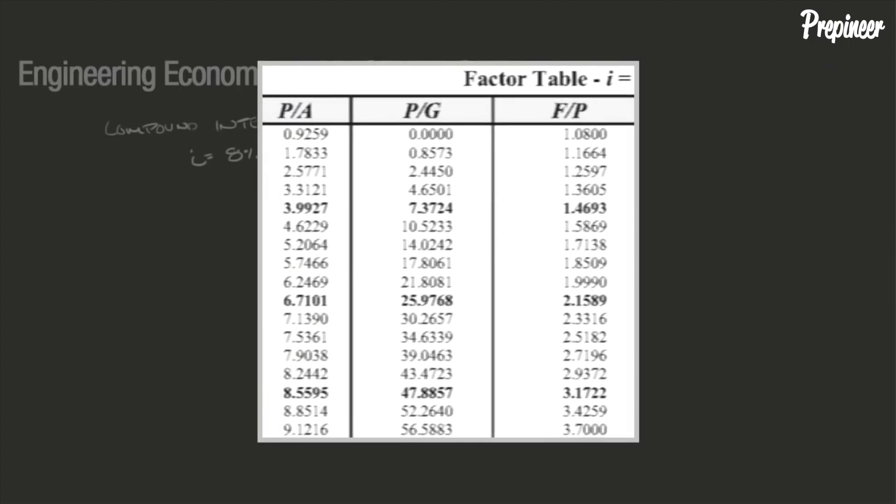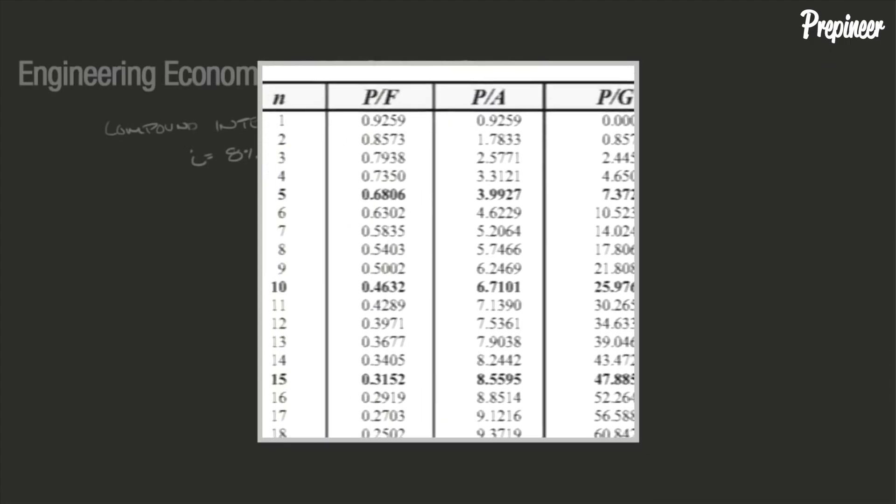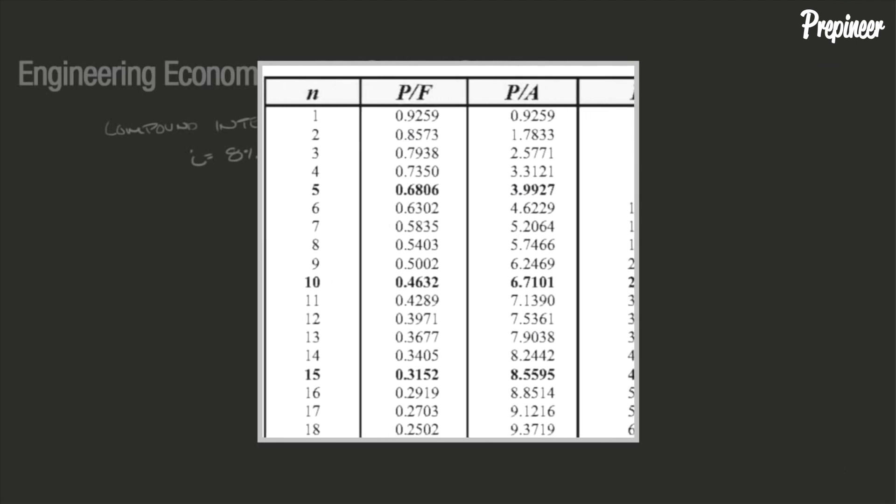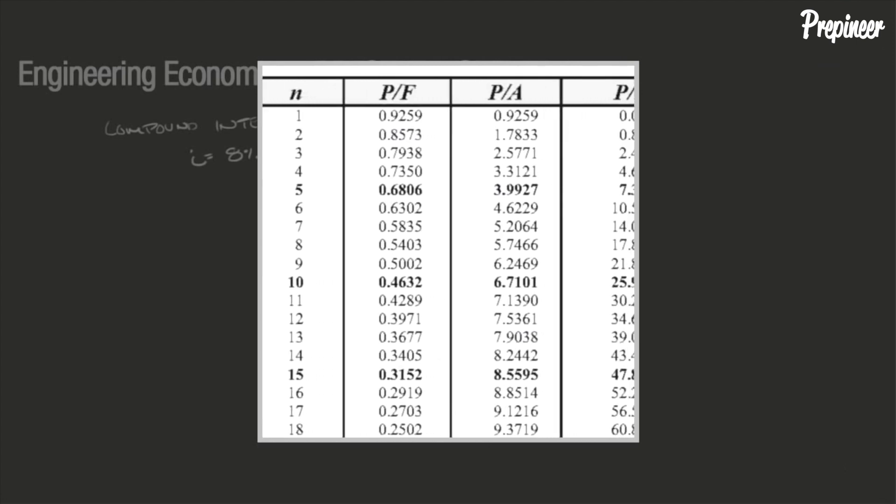Referencing the compound interest table for 8% on page 119 of the NCEES Supplied Reference Handbook, we locate the period N equals 12, which is our far left column, and work our way horizontally and find that P over A IN is equal to 7.5361 and P over F IN is equal to 0.3971.